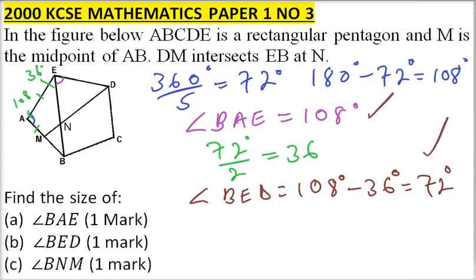That is the first angle. Then, finally, we have BNM. So we are required to get that angle. We already got this angle. Since it is an isosceles triangle, this angle is 36 degrees.